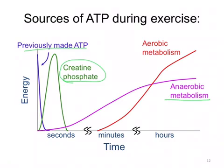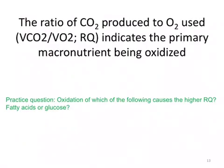Finally, aerobic metabolism gets going after increased oxygen delivery to cells, and sustained exercise absolutely requires aerobic metabolism. Recall that the ratio of carbon dioxide produced to oxygen used — the VCO2 divided by VO2, or the respiratory quotient (RQ) — indicates the primary macronutrient being oxidized. We talked about this way back many weeks ago in Foundations of Medicine.